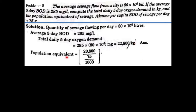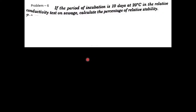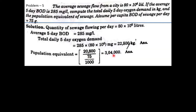Population equivalent = BOD of industrial sewage ÷ standard BOD of domestic sewage per person per day. Per capita BOD = 75 grams = 0.075 kg ≈ 0.08 kg per person per day. Therefore, population equivalent = 22,800 ÷ 0.075 = 3,04,000.